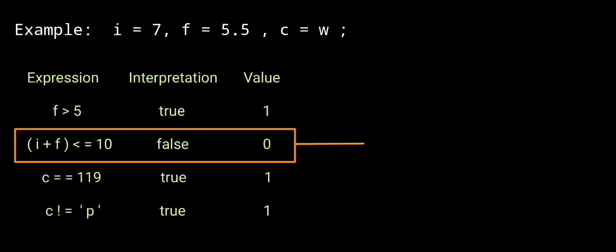Next expression: i plus f less than or equal to 10. i value 7, f value 5.5, so 7 plus 5.5 is 12.5. 12.5 less than or equal to 10 — condition is false. Interpretation is false, value 0.